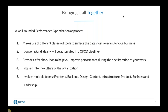Performance also needs to be baked into the culture of the organization — making sure people understand why it's important and identifying those who are strong advocates for performance. The final key aspect is that it involves multiple teams — every team involved in building a website or application has a role to play, spanning front-end, back-end, design, content, infrastructure, product, and business leadership. Ideally it starts from business and leadership and disseminates down, with a performance advocate in each team who understands why good performance matters and helps with optimization efforts.